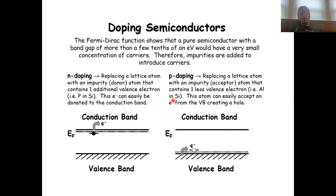How can you improve the conductivity of a semiconductor? You can do this via doping. There are two ways you can dope: you can either n-dope or p-dope. What doping does is introduce additional crystal orbitals into the band gap.